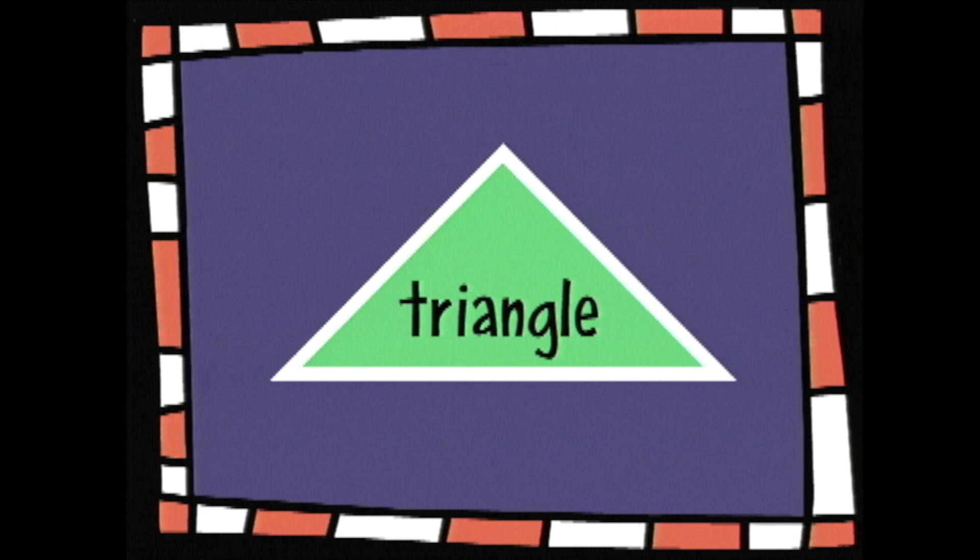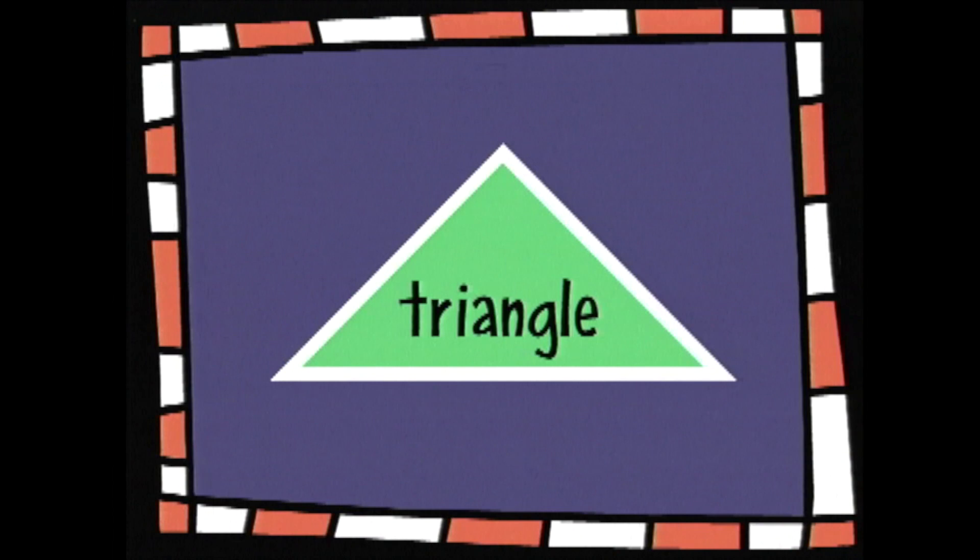This is a triangle — it has three sides. The sides can be different or all the same size. And this is an octagon — if you count the sides, you'll see there are eight. Shapes, shapes, all over the place. Shapes are everywhere, taking up space. Shapes, shapes, go every which way. Shapes, shapes, all over the place.